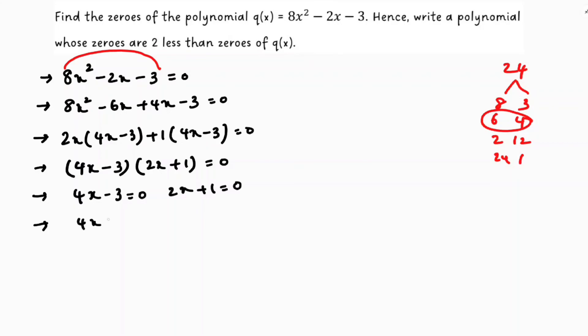4x - 3 = 0, so 4x = 3. 2x + 1 = 0, so 2x = -1. So x equals 3 by 4, here x equals minus 1 by 2.